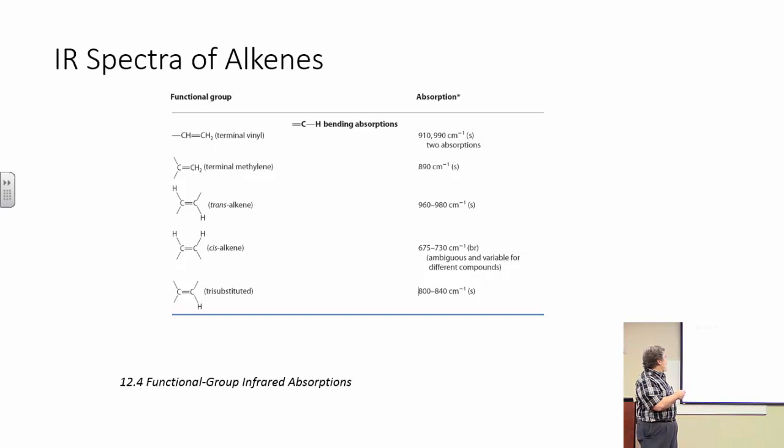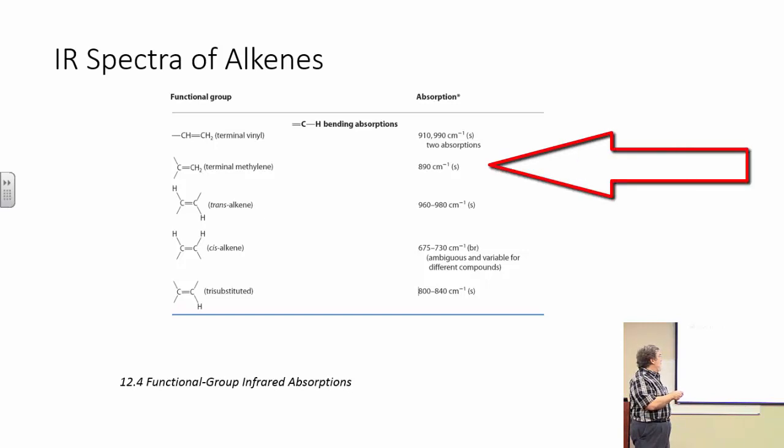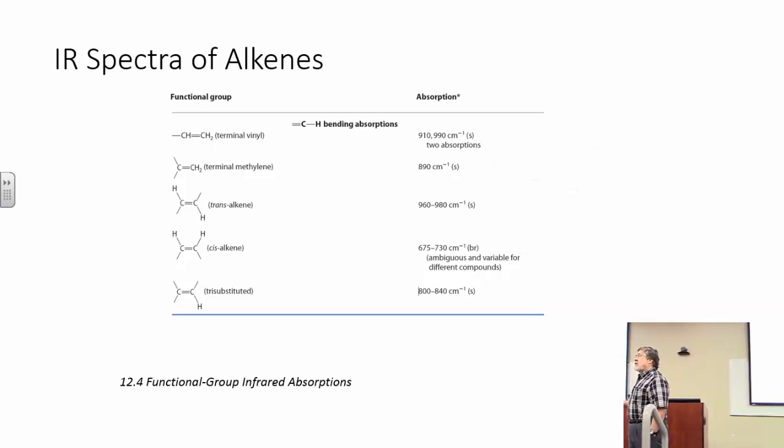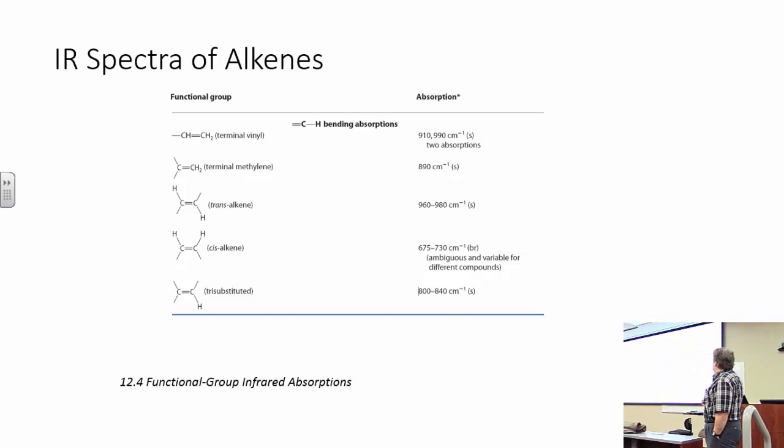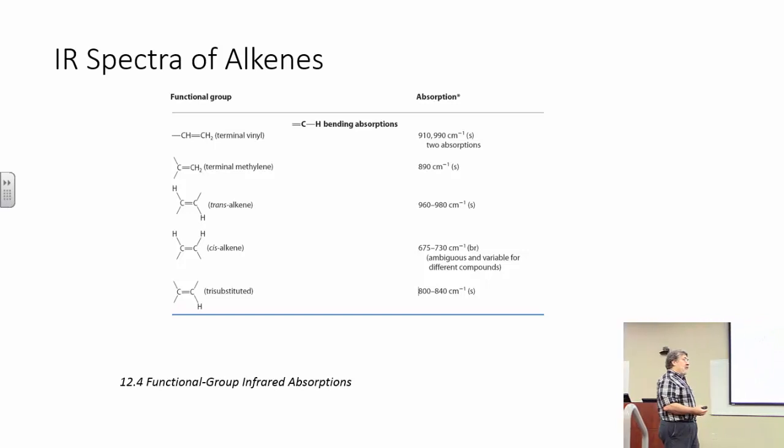Here's the rest of that information, where terminal alkenes, in other words, monosubstituted, 910, 990, almost always exactly right on those numbers. There's a little bit of variation, but not much. In other words, geminal disubstituted has a specific peak at 890, but only 890. So see how they're different? And trans, and cis, and then trisubstituted. So this information can be very useful if you have a particular alkene and you need to know its substitution pattern.